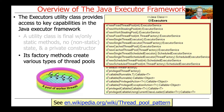The factory methods defined in this class do many things, but for our purposes what matters are the factory methods used to create various types of thread pools. If you take a look at the link at the bottom of the page, you'll learn more about what thread pools are.